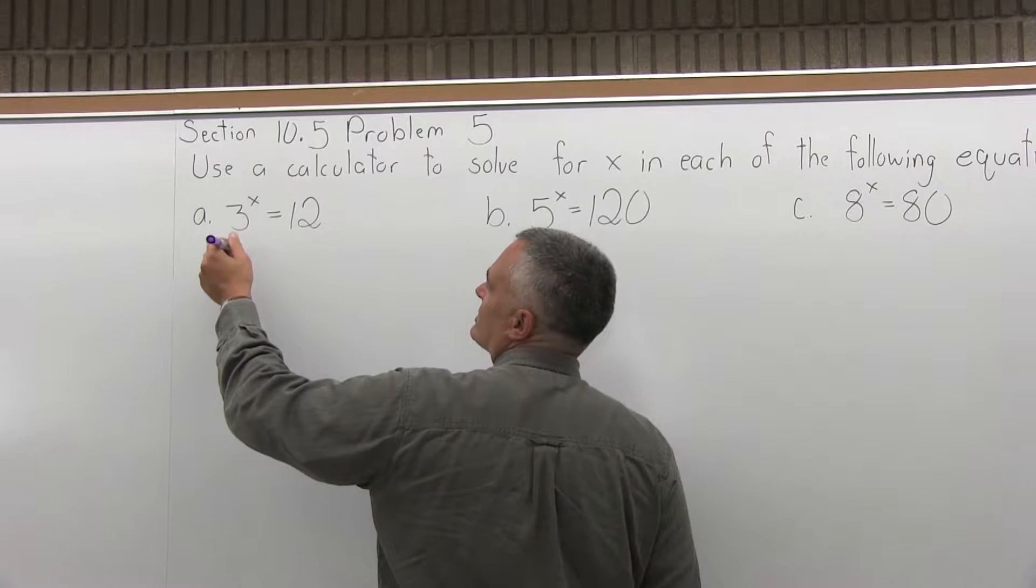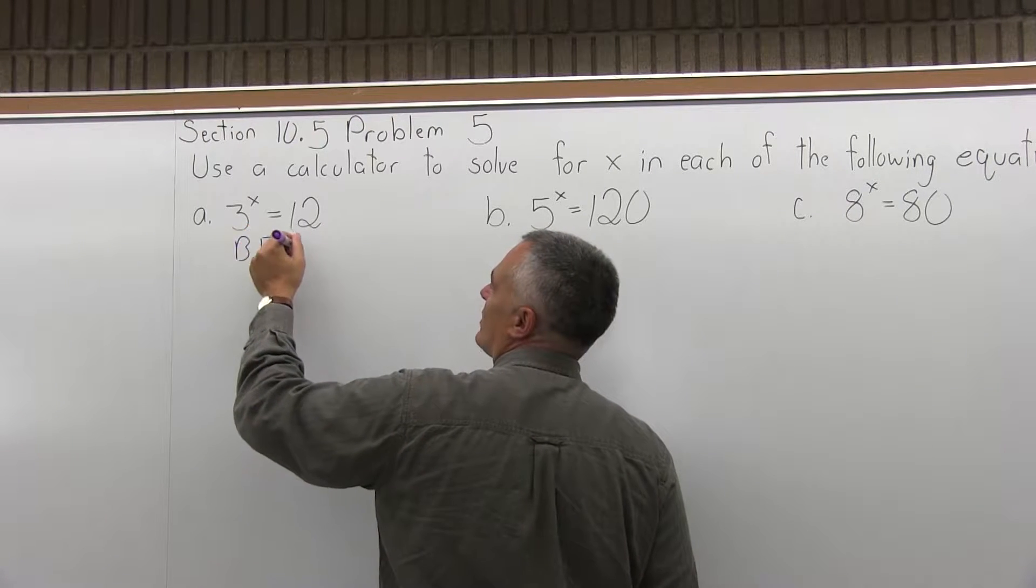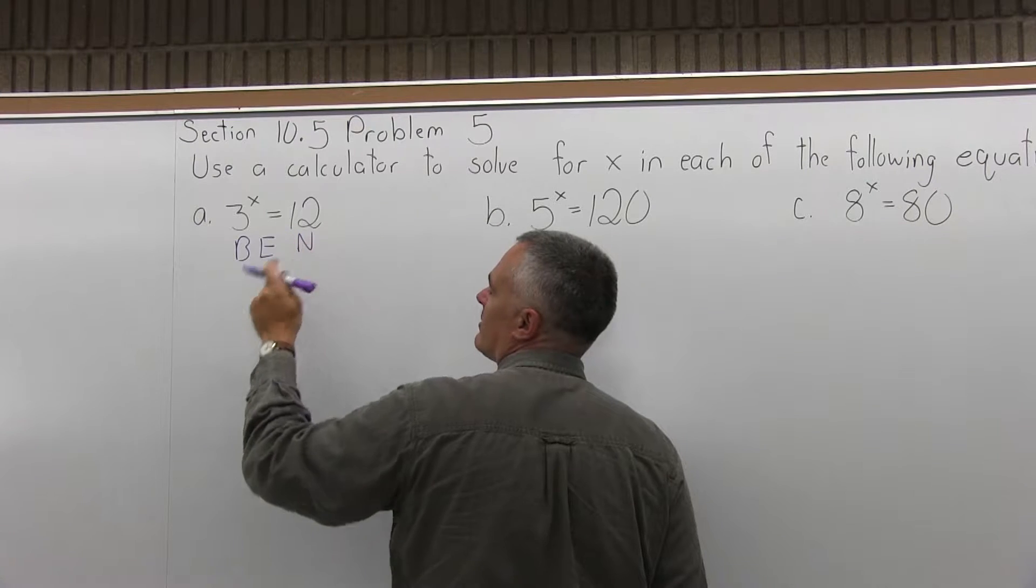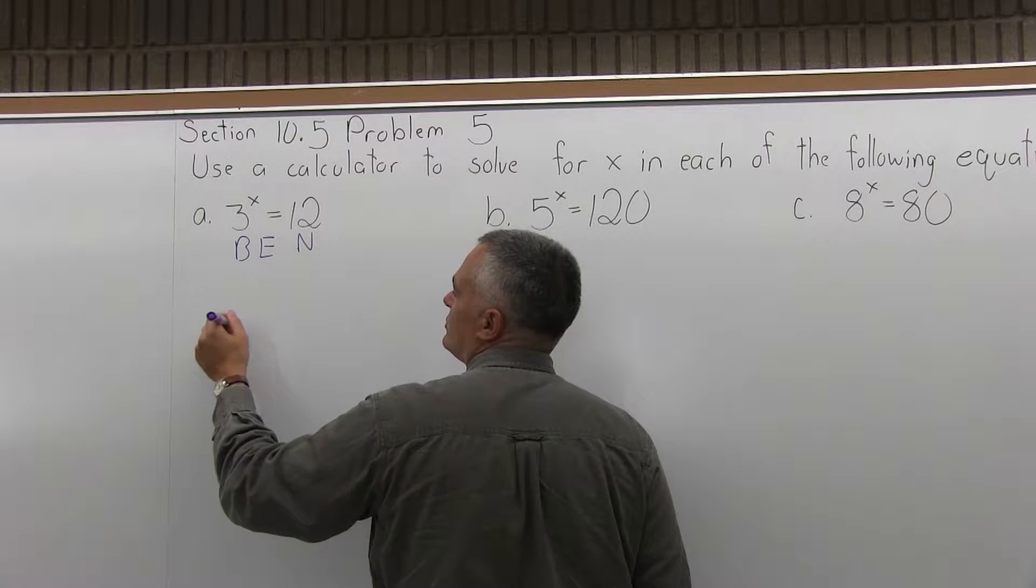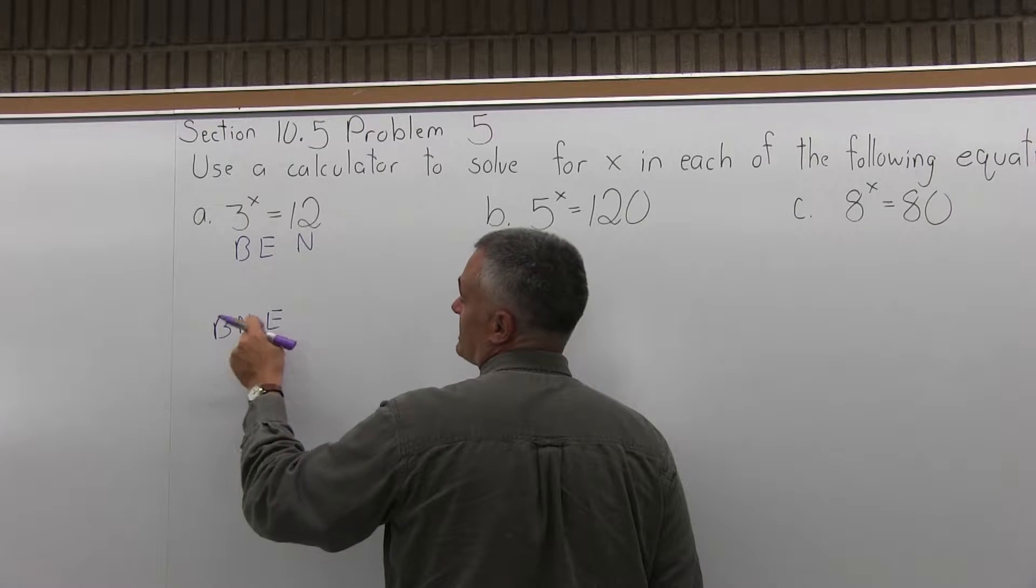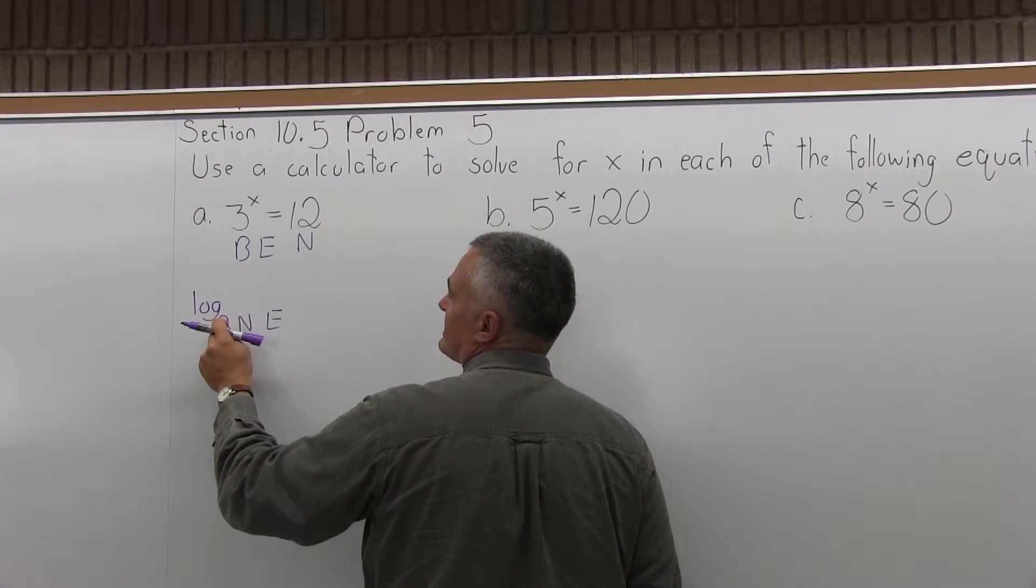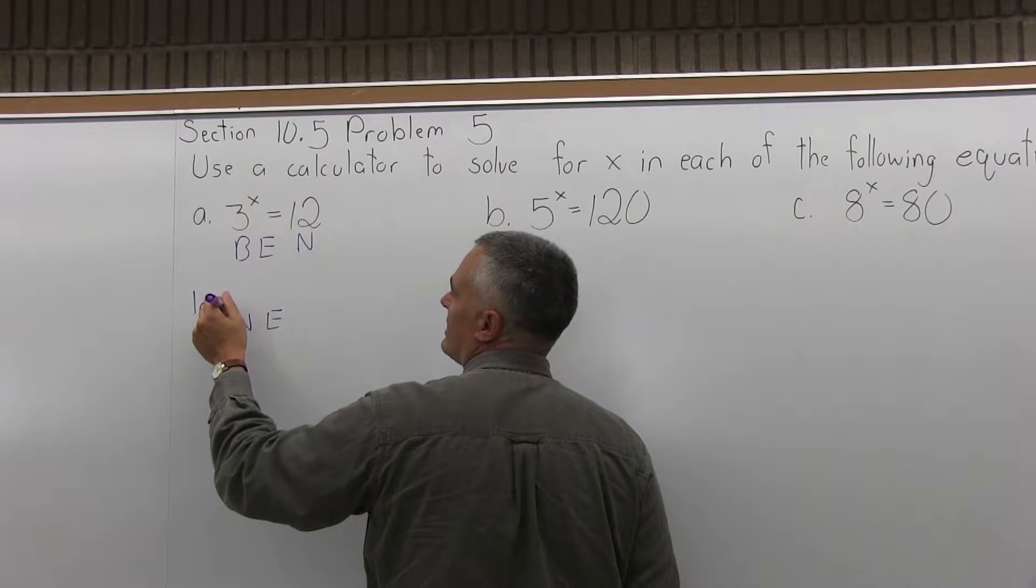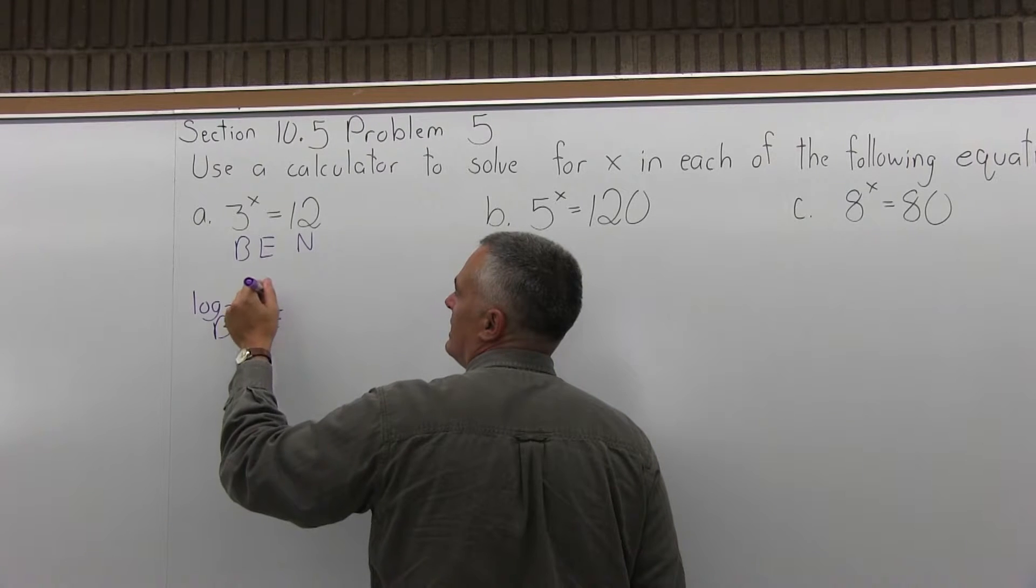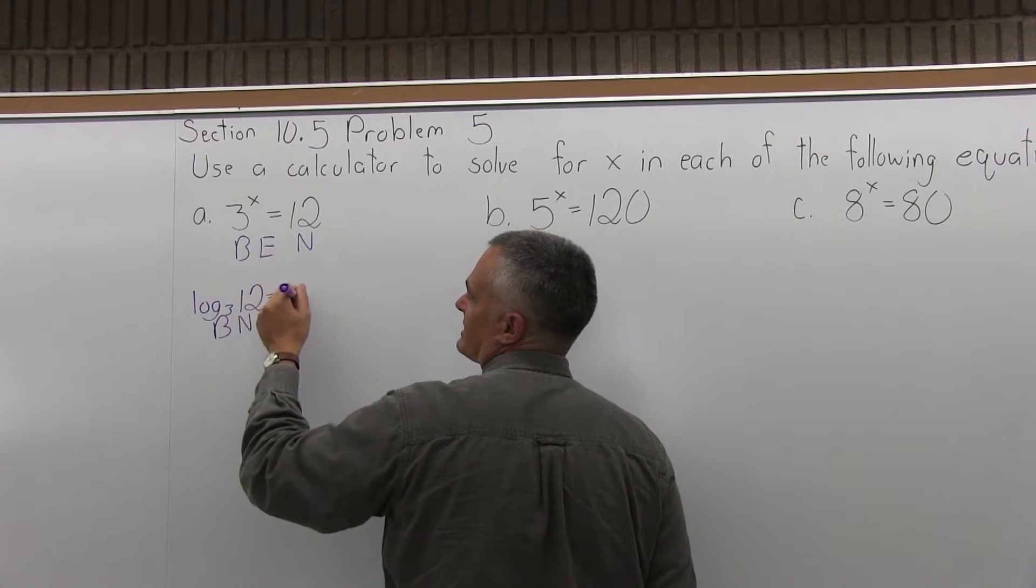So, what you have to do is convert this to a log equation. So written in its exponential form, remember I like to write Ben. B-E-N for base exponent number. Now as a log, you switch it around to Benny. B-N-E still for base number exponent. So you write the word log. Then you put the base as a subscript. The base is 3. Then you write the number. The number is 12. Then you write equals. And then you write the exponent. The exponent is x. That's our unknown.